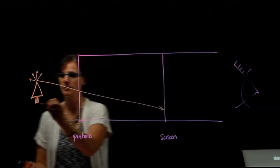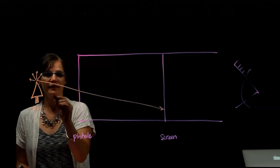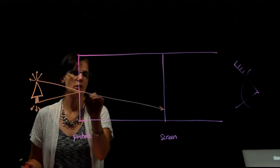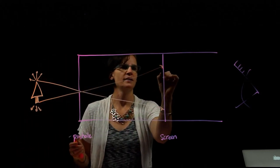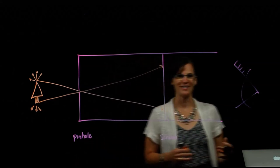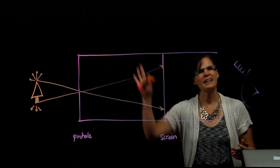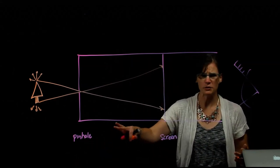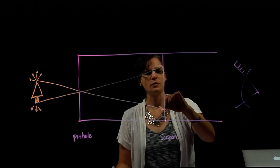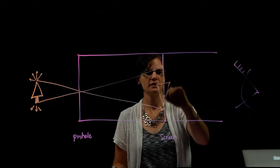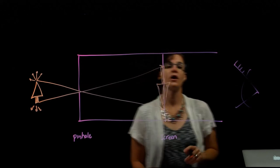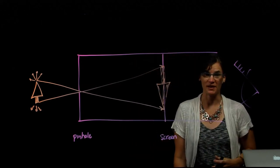Similarly, the bottom of the tree is doing the same thing and one of those rays of light will go through that pinhole and hit the screen. In a straight line, it will hit the top of the screen. All of the parts of the tree do the exact same thing and we see that the tree image is produced on the screen, upside down. We talked about that in class.